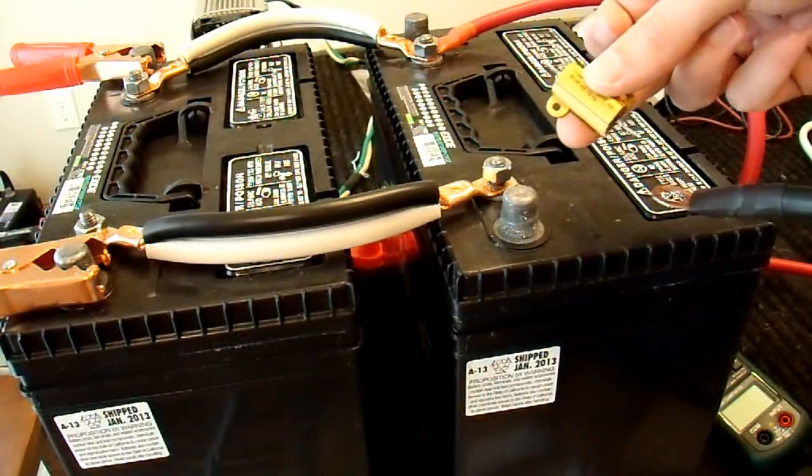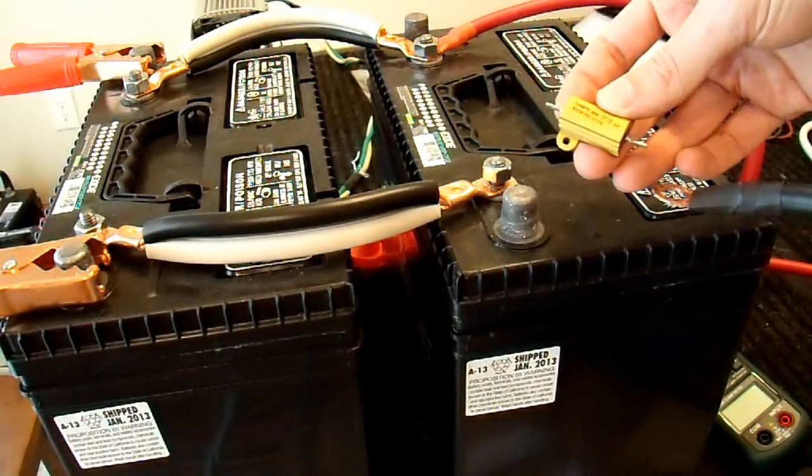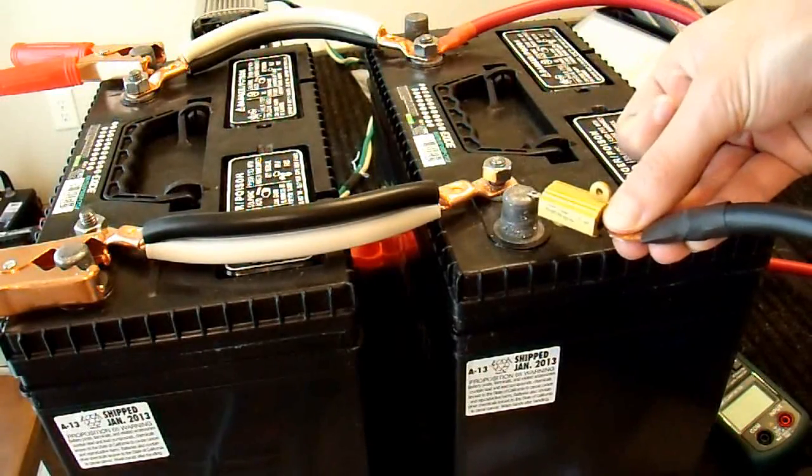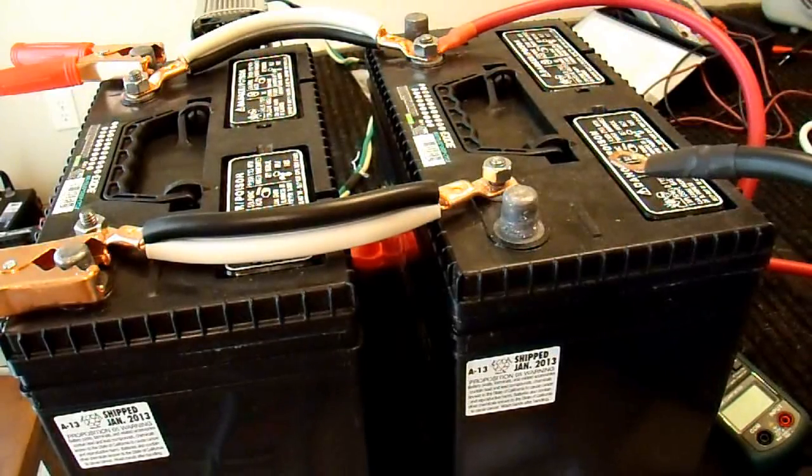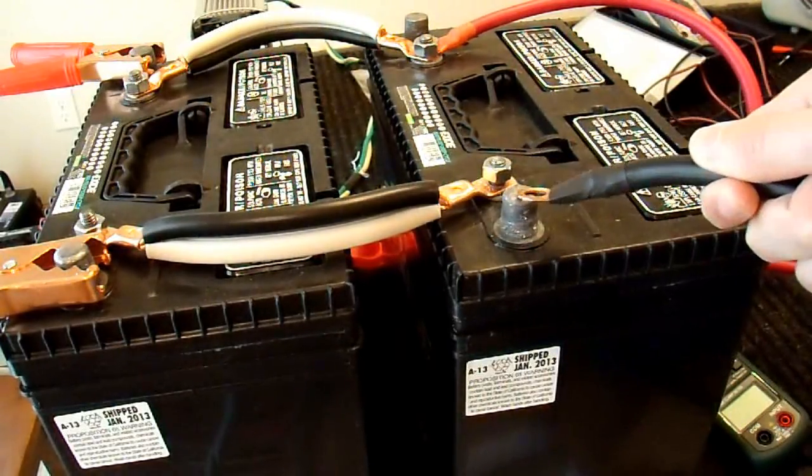What I do to avoid this problem, since I'm connecting and disconnecting inverters all the time here, is I just have this little 1-ohm resistor. I hook it up to my cable, put it on this post briefly, and now my inverter is charged up to battery voltage. And when I make this connection, there's no spark.